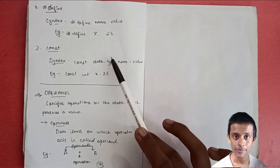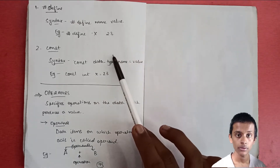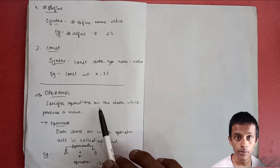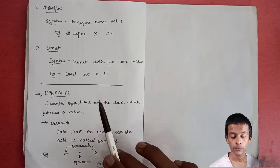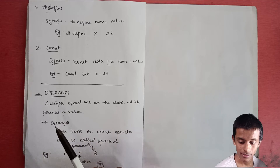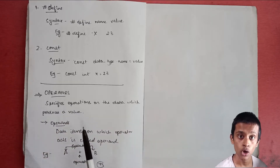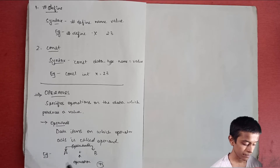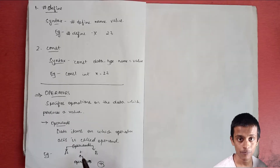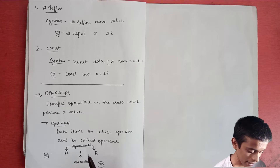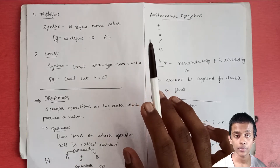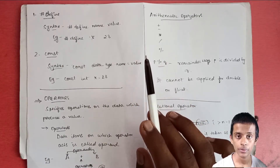Now let's look at operators. An operator specifies an operation on data which produces a value. Operands are the data items on which the operators act. For example, in 'a + b', the plus symbol is the operator and a and b are the two operands. There are many types: logical operator, assignment operator, relational operator, and bitwise operator, which we'll look into in due course.